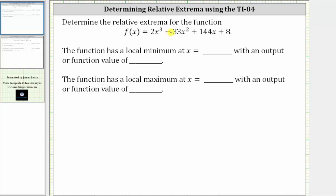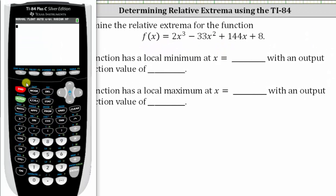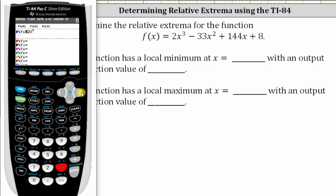We want to determine the relative extrema for the given polynomial function on the TI-84. Let's begin by entering the function. We press y equals and enter 2x raised to the power of three, right arrow, minus 33x squared, plus 144x, plus eight, and enter.